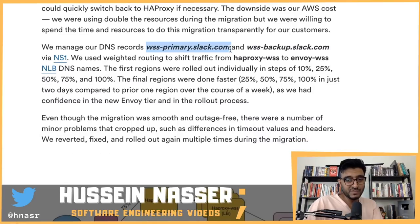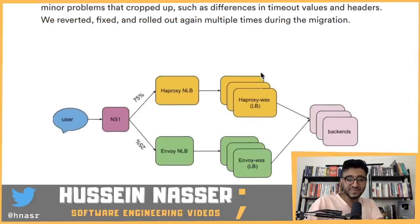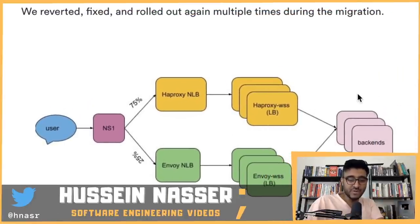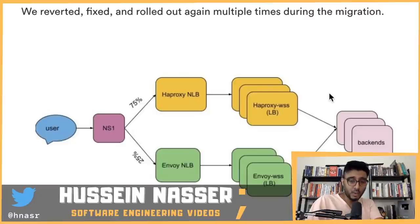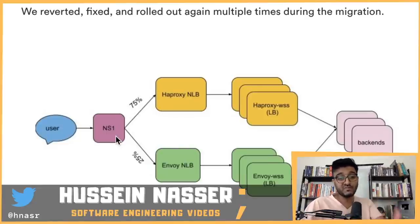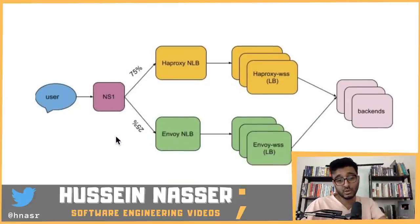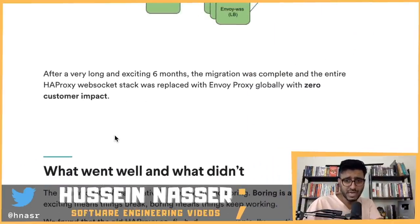The migration to production was done beautifully. They used a weighted DNS approach on their wss-primary.slack.com entry — there are two boxes: the upper box is the HAProxy network load balancer and the lower box is the Envoy network load balancer. The name server has two arrows pointing to each, with HAProxy taking 70% of traffic and Envoy taking 25%. They slowly decreased the weight routing to HAProxy and moved everything to Envoy until HAProxy took zero connections. They ran into a few problems along the way but fixed them all.